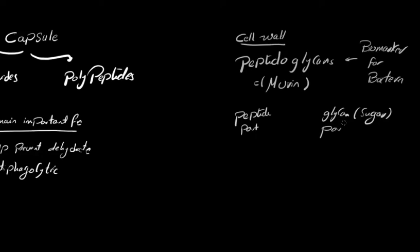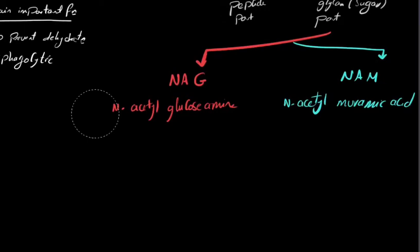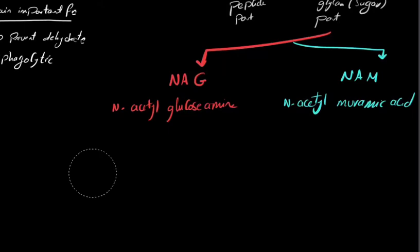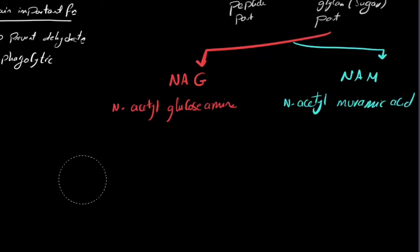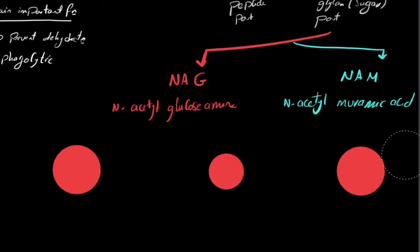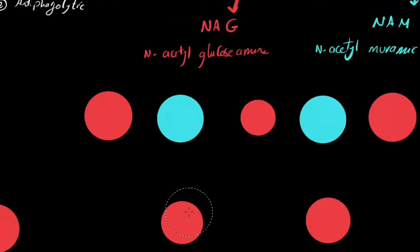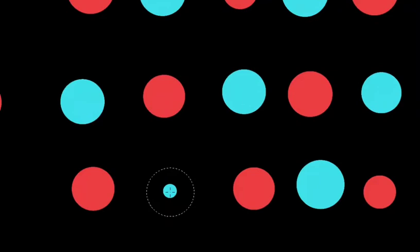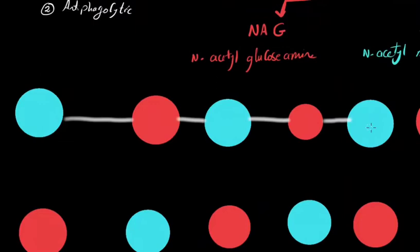As the name suggests, the peptidoglycan layer is formed of a peptide part and a glycan part. The peptide part contains amino acids; the glycan part contains sugars. The glycan part consists of alternating units of N-acetylglucosamine (NAG) and N-acetylmuramic acid (NAM). Each layer of the glycan part alternates between NAG — shown in red — and NAM — shown in blue.